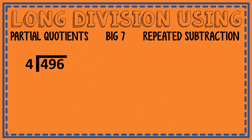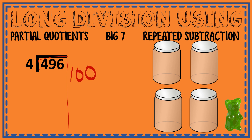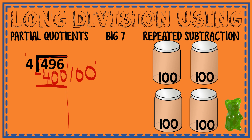Let's look at another example using partial quotients and the Big Seven. I have 496 divided by 4, and I'm going to divide 496 gummy bears into four equal jars. I extend my arm and use repeated subtraction. Can I fit 100 gummy bears in each jar? Yes — 100 times 4 is 400. So I put 100 in each jar, and now I no longer have 496 gummy bears — I have 96 left.